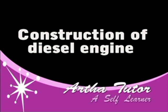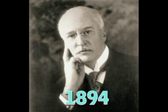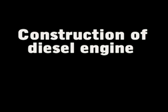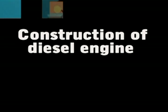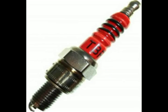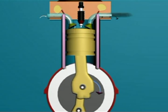Rudolf Diesel, a German scientist, improved the petrol engine and invented the diesel engine in the year 1894. This was named after his name as the diesel engine. The construction of the diesel engine is similar to the petrol engine except it has a fuel injection pump fitted in place of the spark plug. A carburetor is not required in a diesel engine because only air is taken inside during the intake stroke, not a fuel-air mixture.